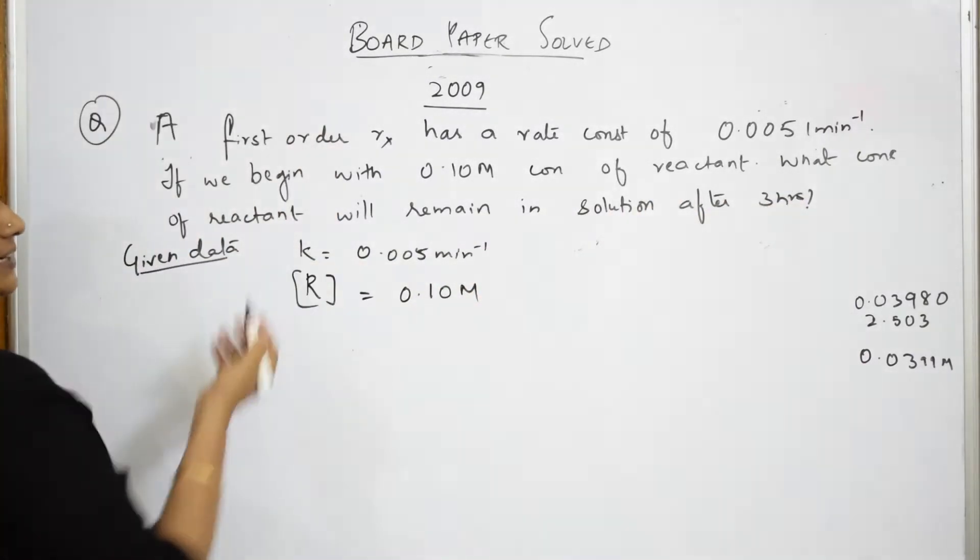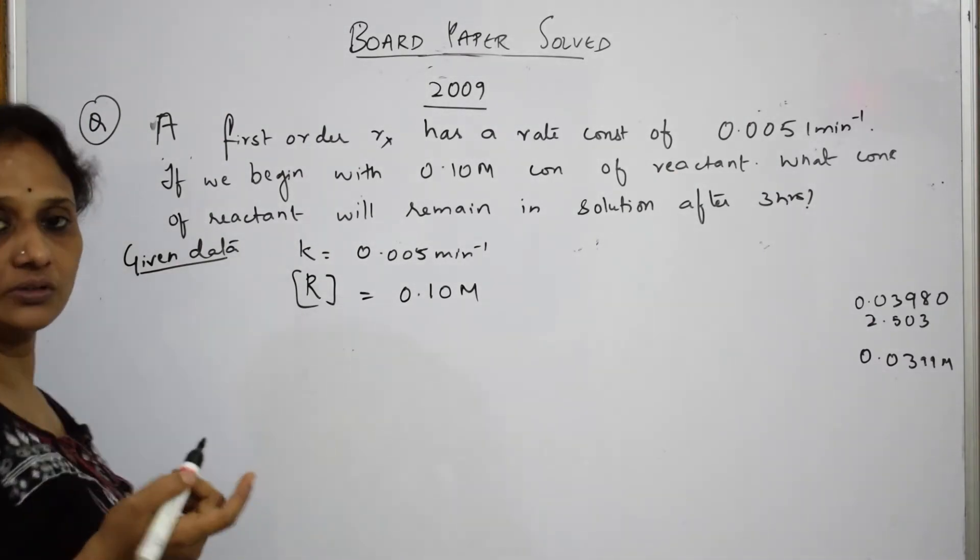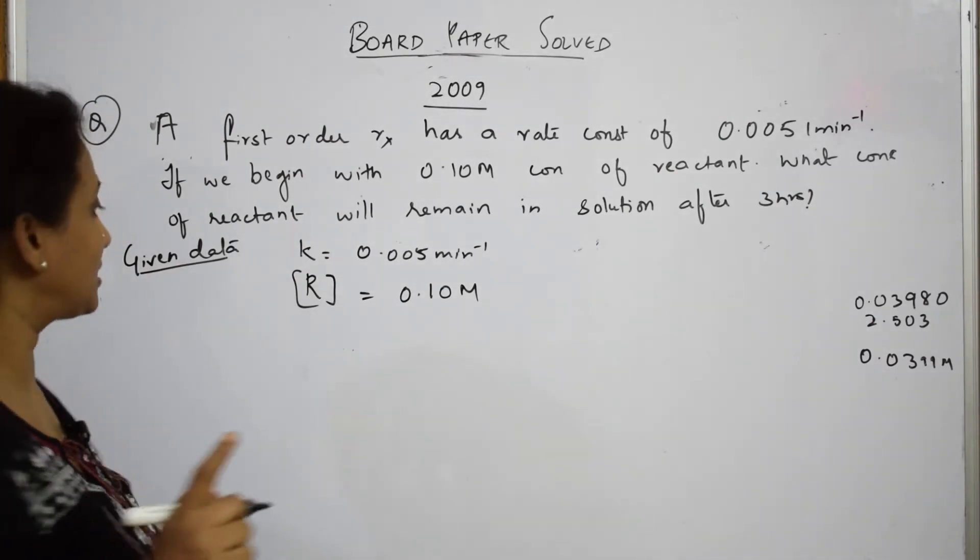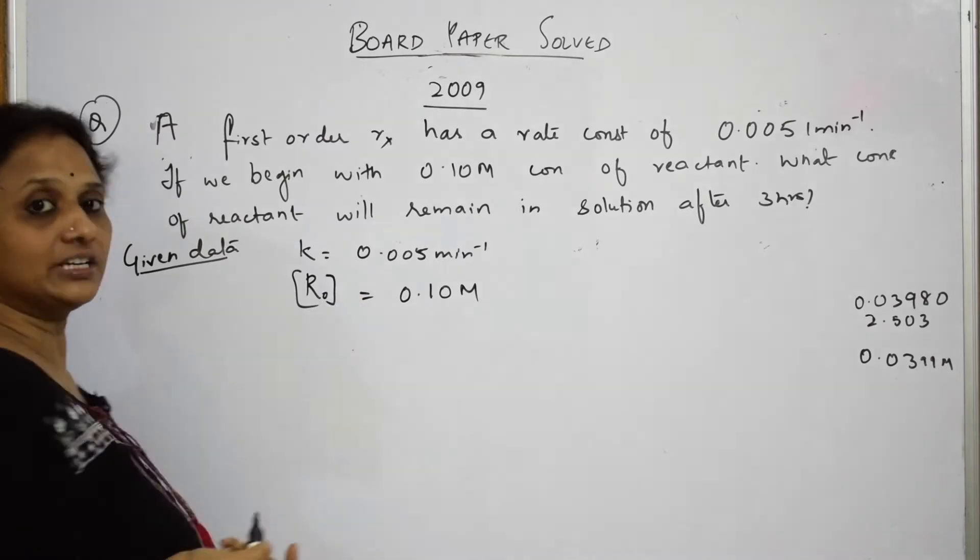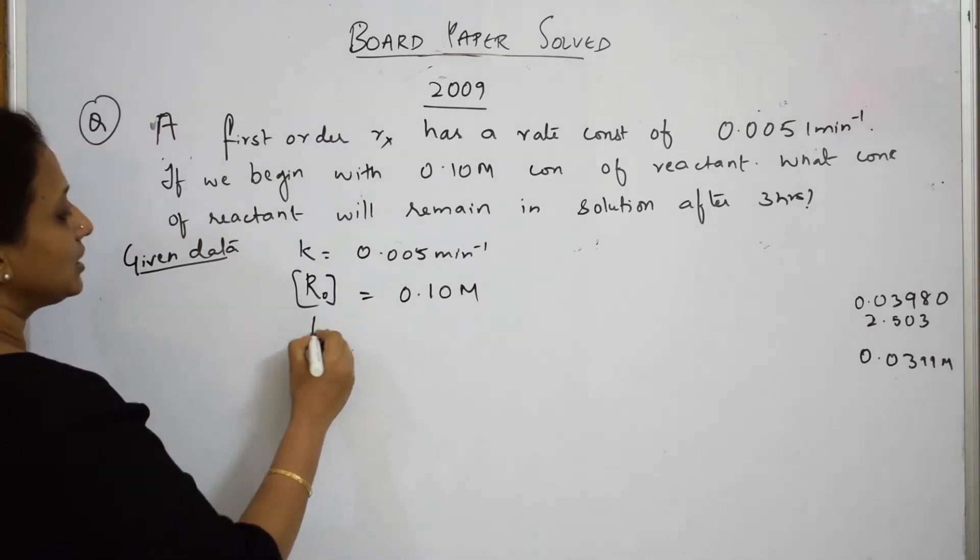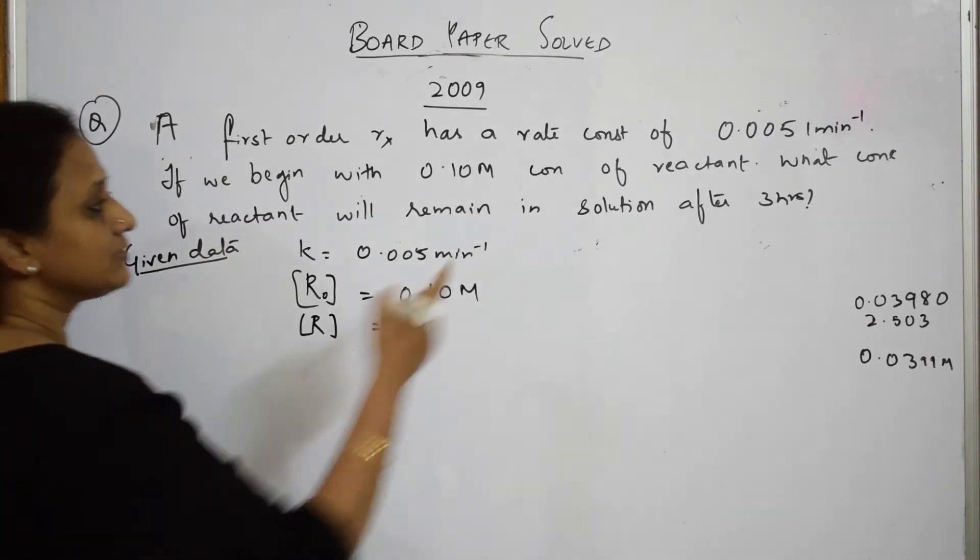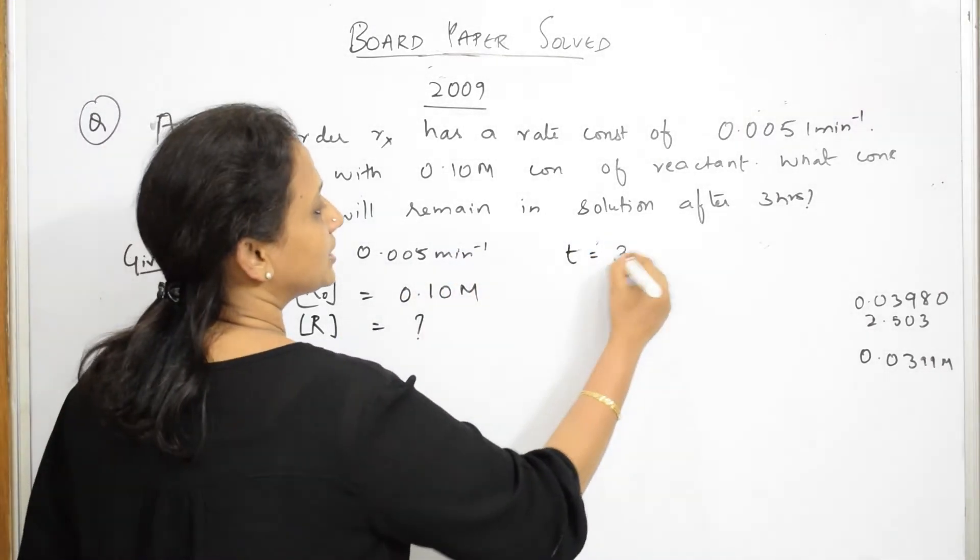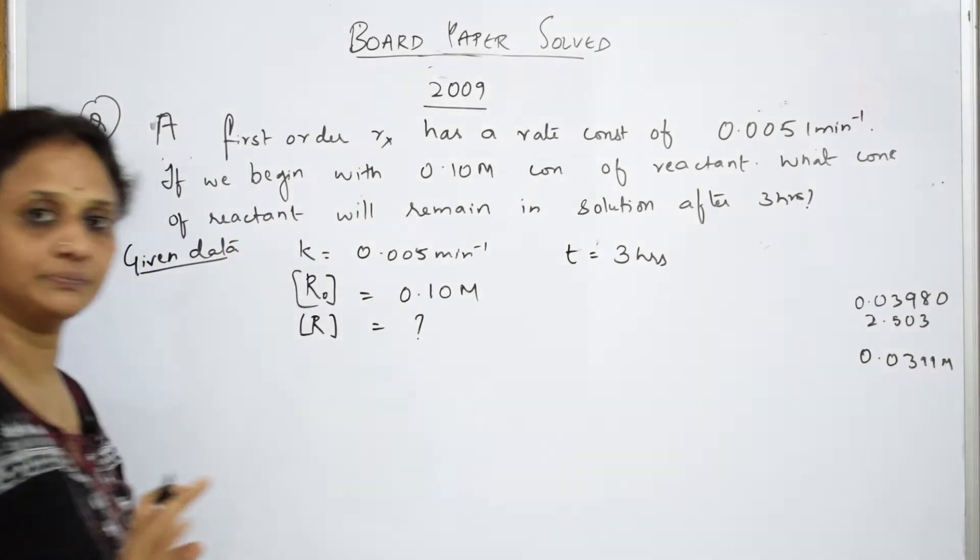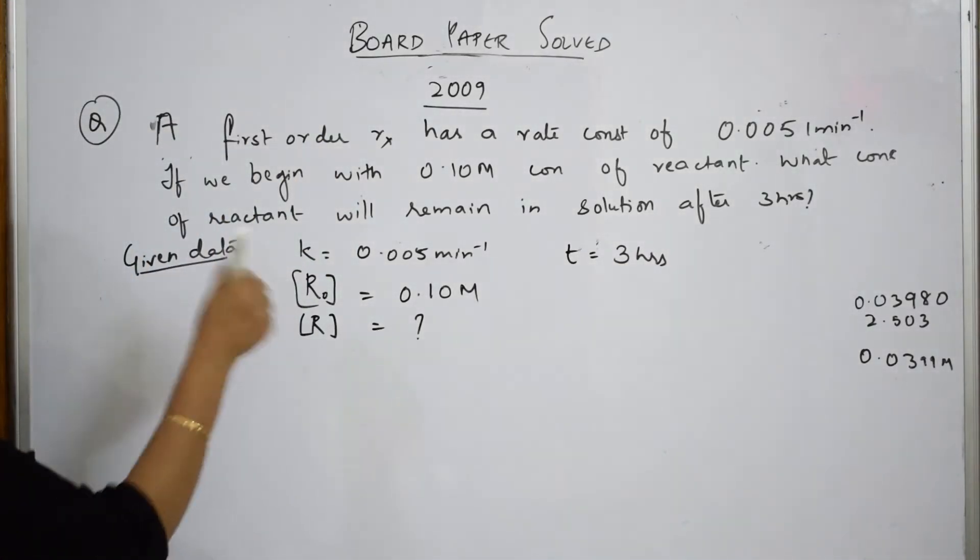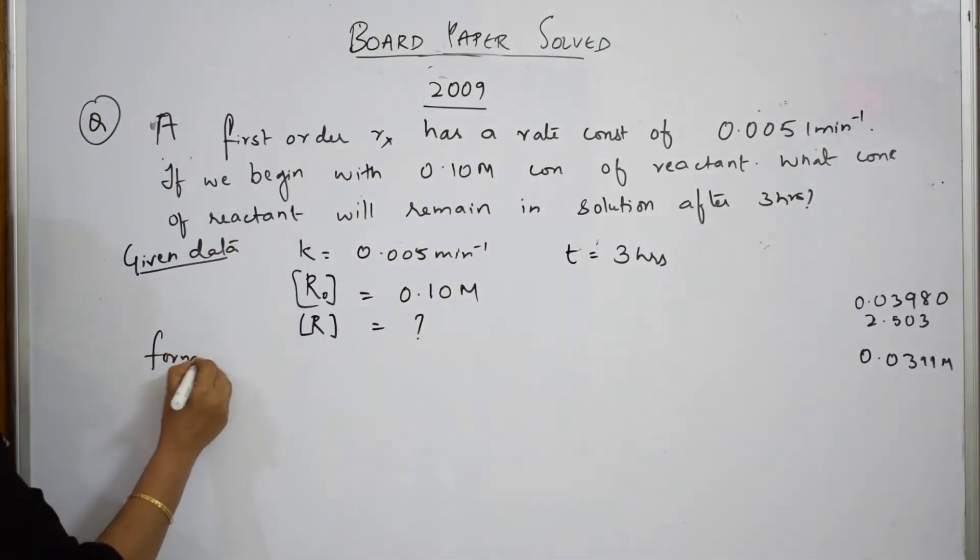What concentration of the reactant will remain? The leftover, that is A minus X, which is nothing but R. This is R naught initial, so they want you to find out the R value, the A minus X value in the solution. What is the time interval given to us? After 3 hours. What should I find out? I have to find out R.